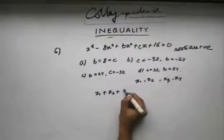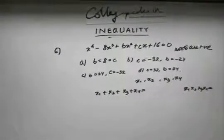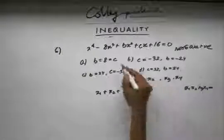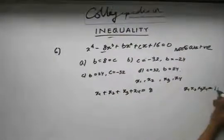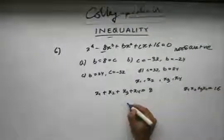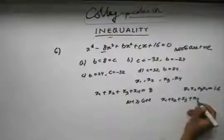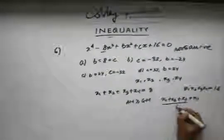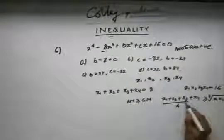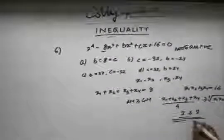From Vieta's formulas, x₁ + x₂ + x₃ + x₄ = 8, and x₁ · x₂ · x₃ · x₄ = 16. Now applying the AM-GM inequality: (x₁ + x₂ + x₃ + x₄) / 4 ≥ (x₁x₂x₃x₄)^(1/4). The left side is 8/4 = 2, and the right side is the fourth root of 16, which is also 2.